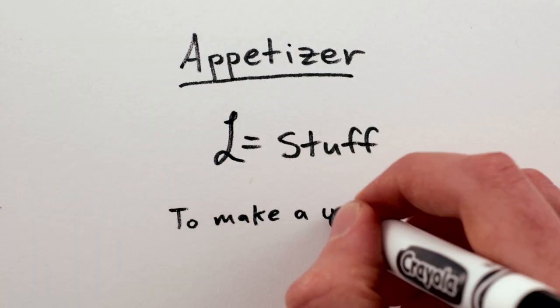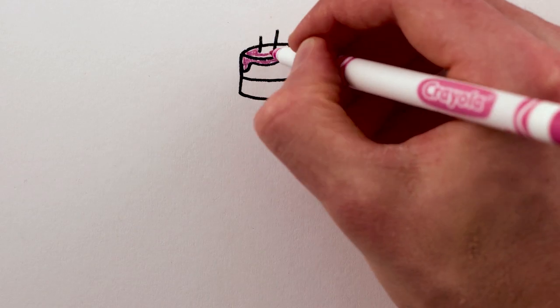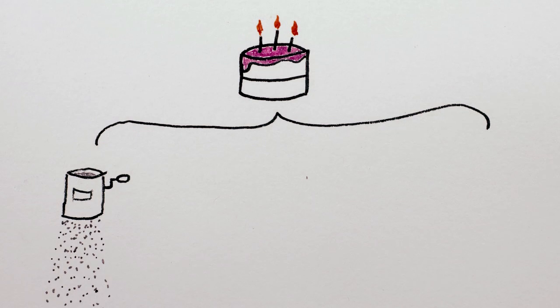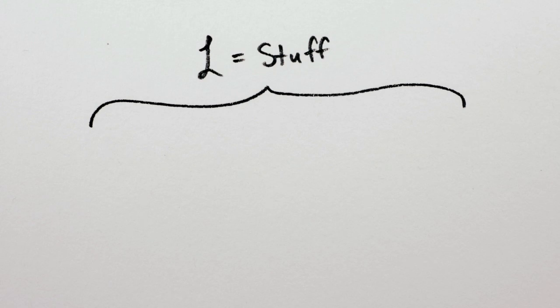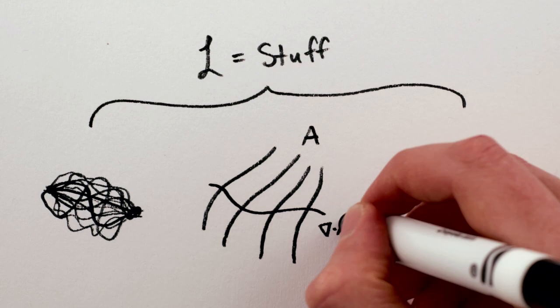For starters, it's more like a recipe. And just as a recipe for cake assumes you already know how to sift flour, beat egg whites, build an oven, and grow wheat, this equation assumes you already know about path integrals, gauge theories, and so on.